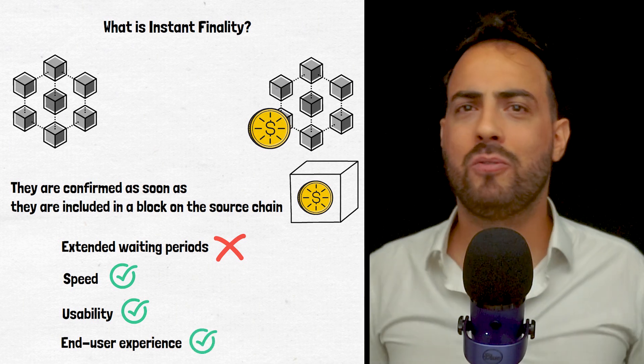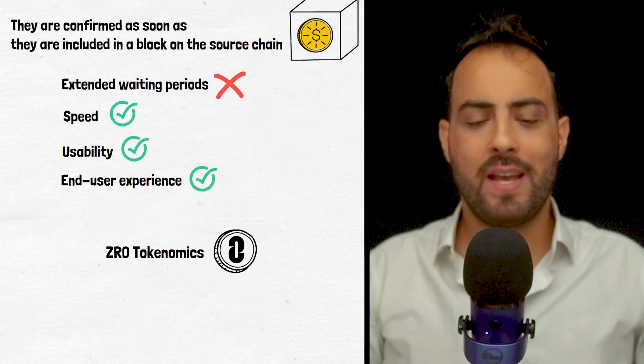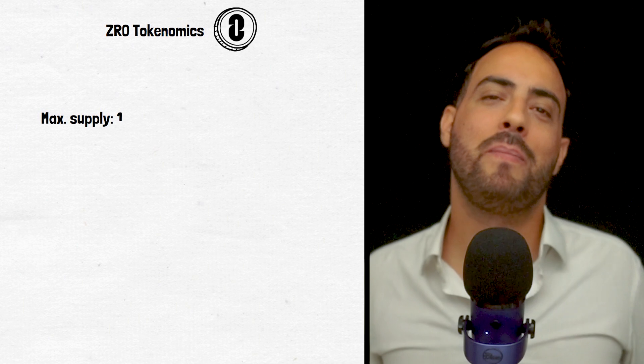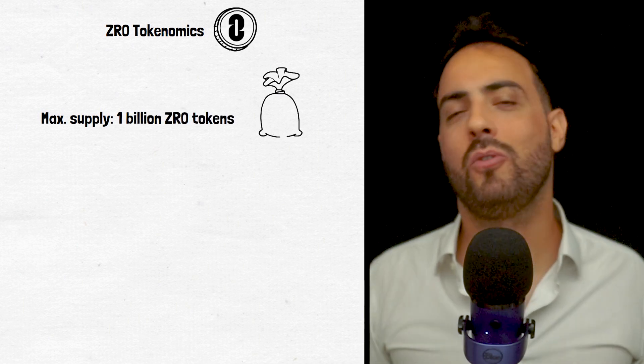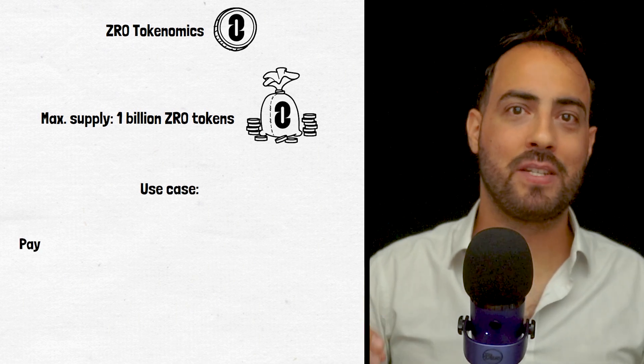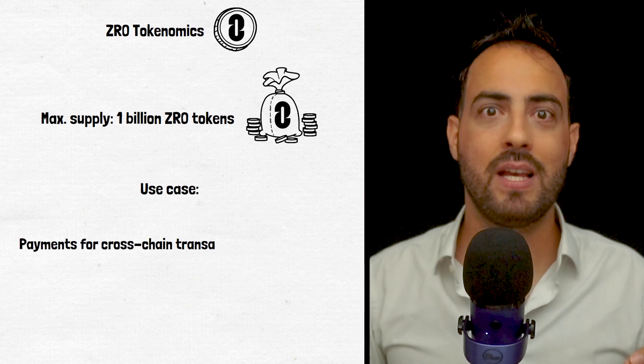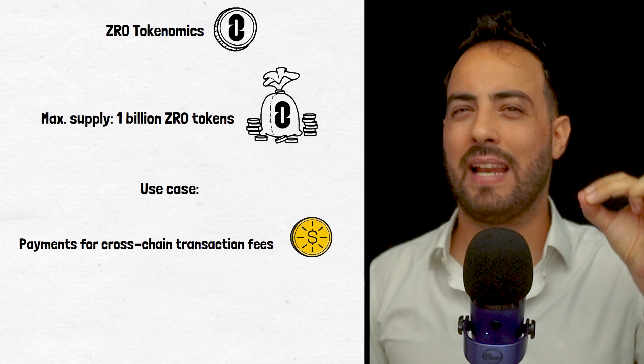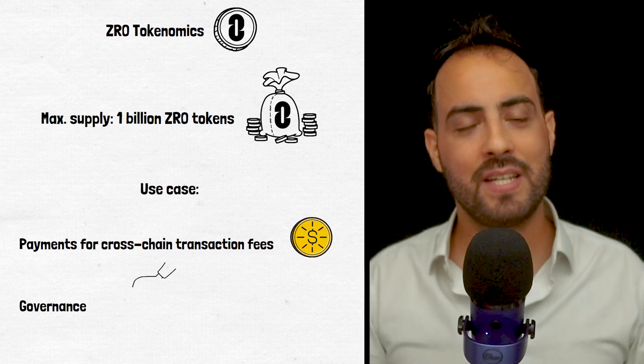But how about the ZRO tokenomics? In total, there will only ever be 1 billion ZRO tokens. The ZRO token itself facilitates payments for cross-chain transaction fees and other services within the Layer 0 ecosystem, such as governance.